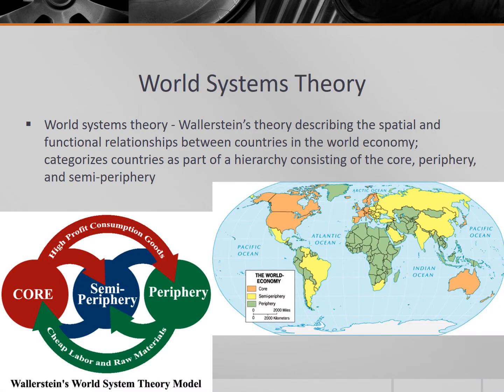In response to Rostow's theory, Immanuel Wallerstein created the World Systems Theory in 1974. The World Systems Theory is Wallerstein's theory describing the spatial and functional relationships between countries and the world economy. It categorizes countries as part of a hierarchy consisting of the core, the periphery, and the semi-periphery. He responded to many parts of Rostow's modernization model that he disagreed with.